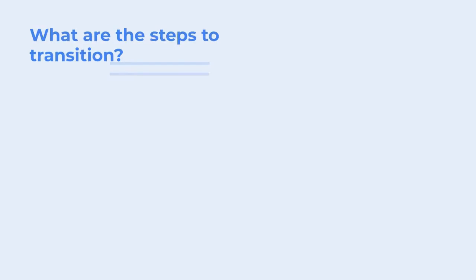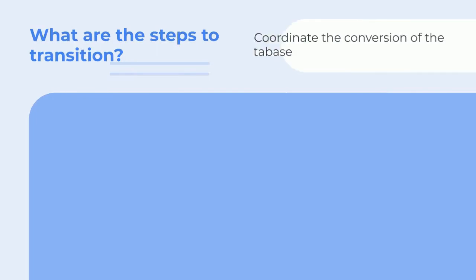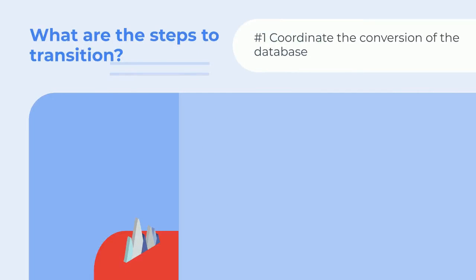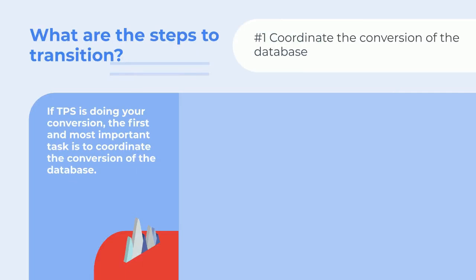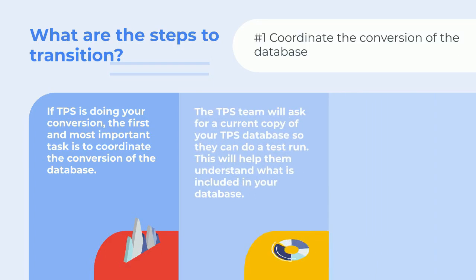What are the steps to transition? Number one is to coordinate the conversion of the database. If TPS is doing your conversion, the first and most important task is to coordinate the conversion of the database. The TPS team will ask for a current copy of your TPS database so they can do a test run of the conversion. This will help them understand what is included in your database.